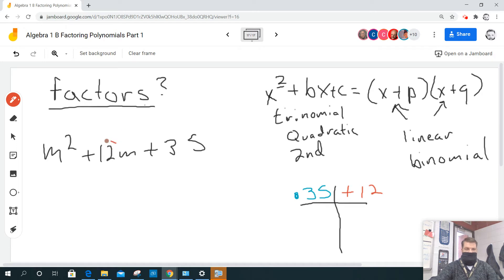In other words, when I add these numbers up, they have to add up to 12, and when I multiply them, they have to equal 35. So I'm thinking 7 times 5 equals 35, and I'm thinking that 7 plus 5 equals 12.